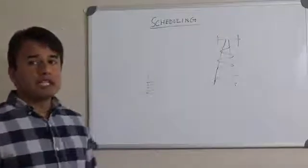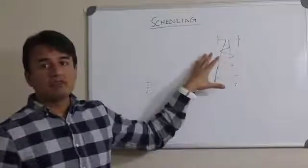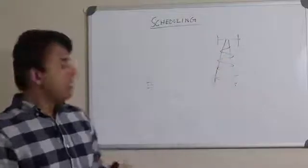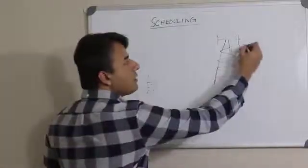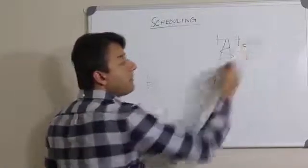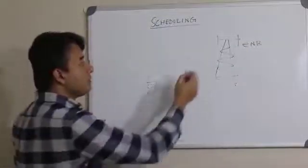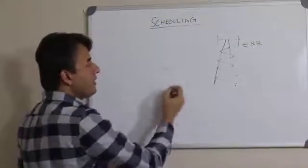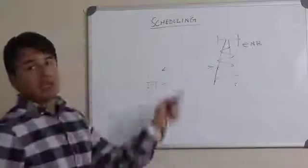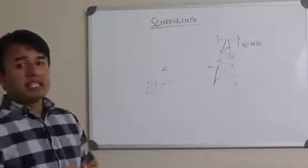In this module, we are going to talk about scheduling in LTE. The scheduler resides in the eNodeB, and it makes all the decisions related to scheduling data in the downlink. The scheduler also makes decisions about how data will be sent in the uplink.